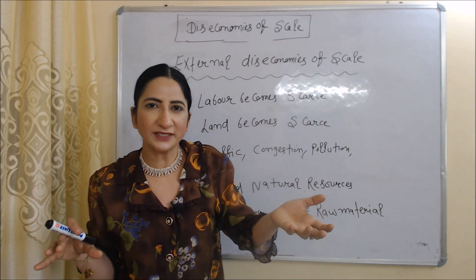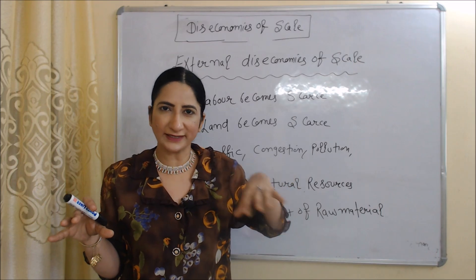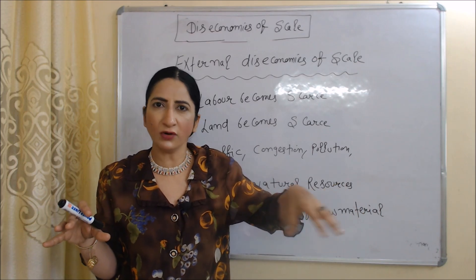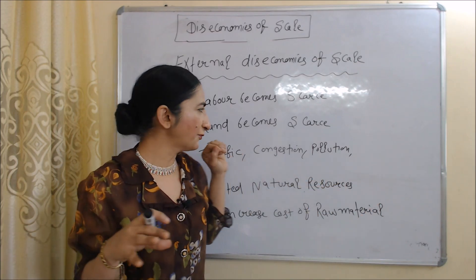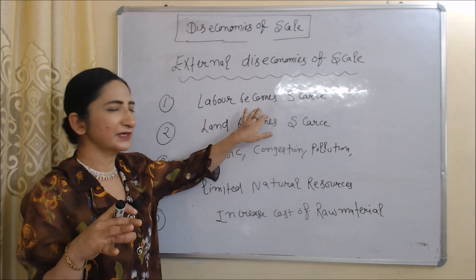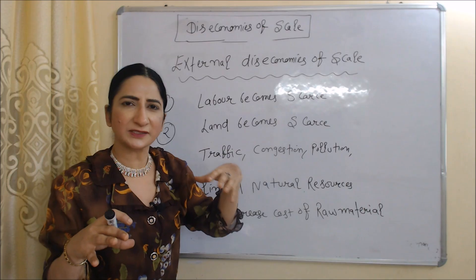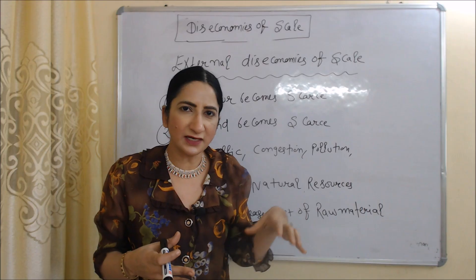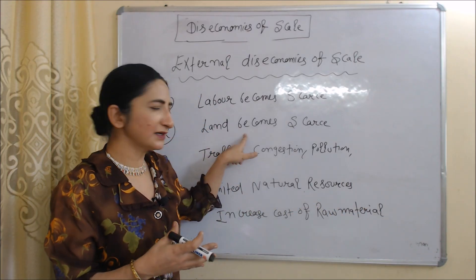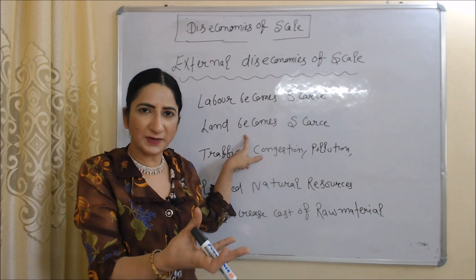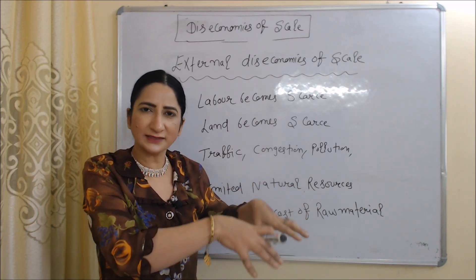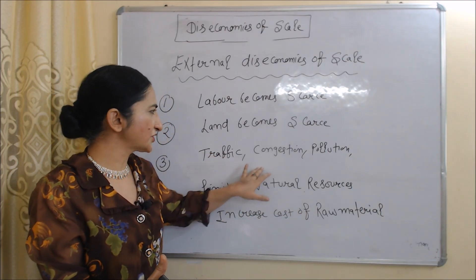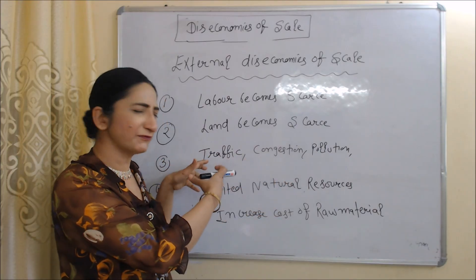Now we are going to talk about external diseconomies of scale. External diseconomies of scale means that as the whole industry expands, some disadvantages occur and their burden falls on all firms in the industry. The first external diseconomy of scale is that labor becomes scarce: as the industry expands, there is more demand for labor but the supply is limited, so wage rates will increase. Second is that land becomes scarce: as the industry expands, there is more demand for land but supply is limited, so rent will increase.